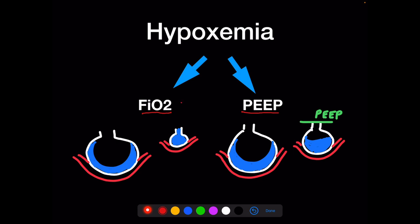What does PEEP do? In inspiration, the alveolus opens up somewhat; in expiration, because of whatever is filling it, it completely closes — like a wet balloon that's very difficult to re-open. With end-expiratory pressure, inspiration is the same, but in expiration, when alveolar pressure reaches, say, 10 cmH2O, exhalation stops — so the alveoli remain somewhat open. Oxygen and CO2 exchange continues, and the alveolus is more easily opened with the next breath.